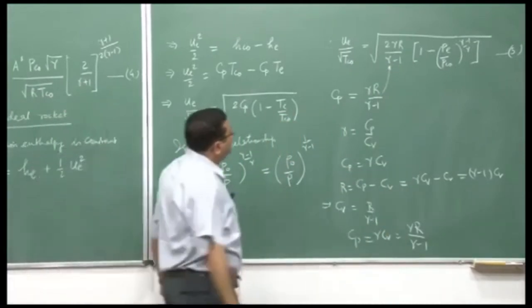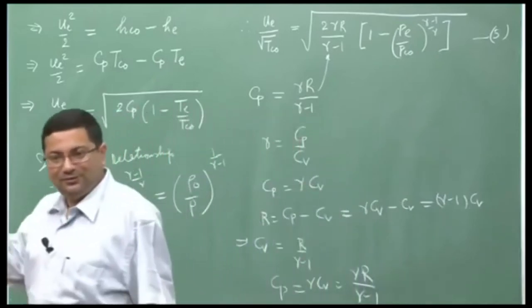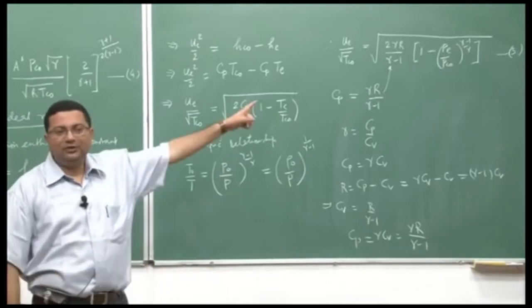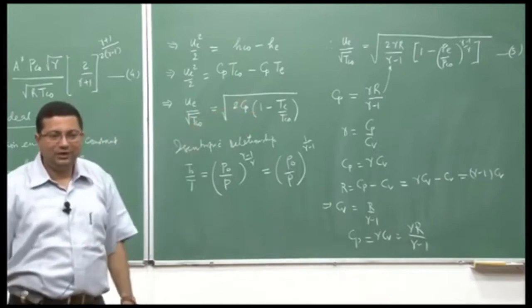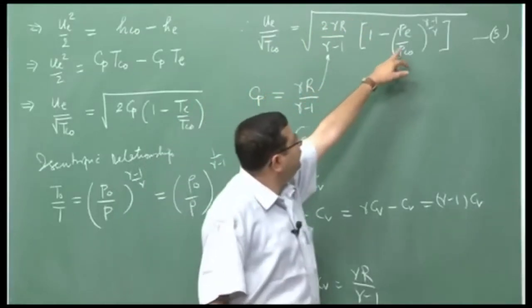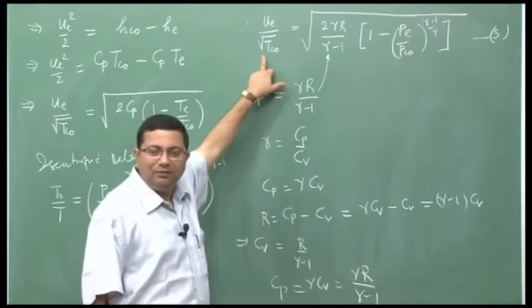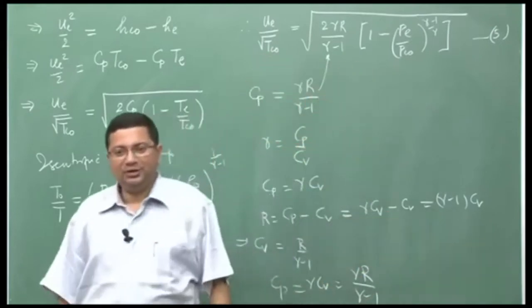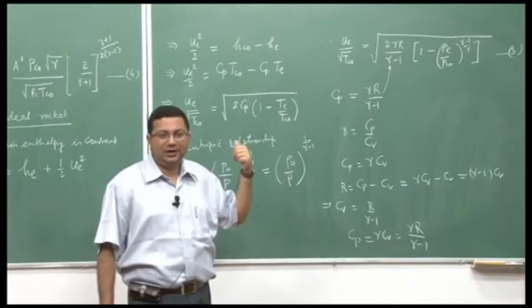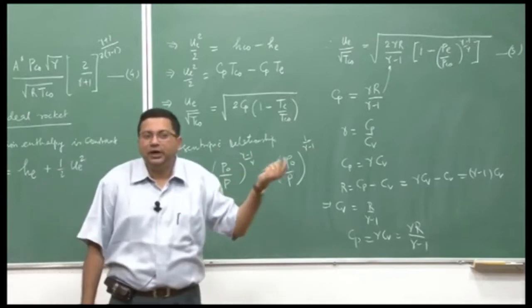This is now our expression for the exit velocity — what we have been trying to obtain. From flight mechanics, what we needed was this exit velocity. We can see that the exit velocity is a function of the fluid properties γ and R, the exit pressure, the stagnation temperature, and the stagnation pressure at the combustion chamber. This equation gives us the exit velocity needed to estimate the thrust.